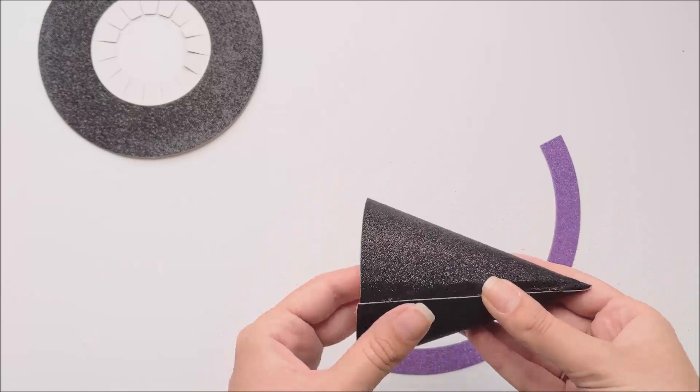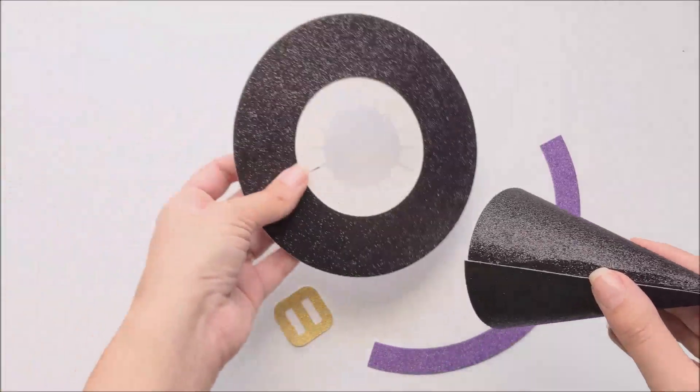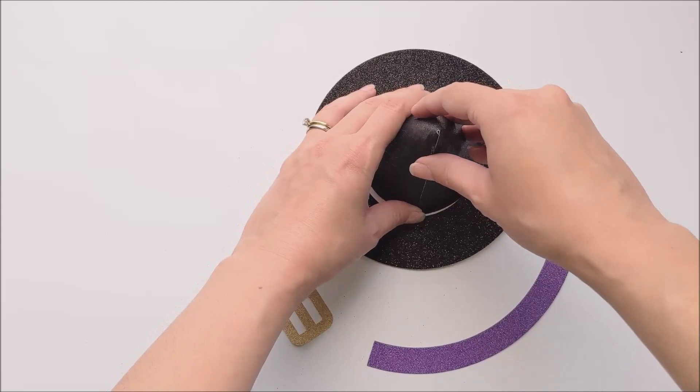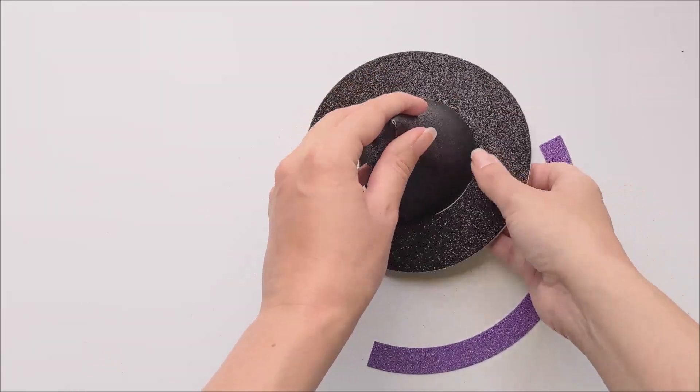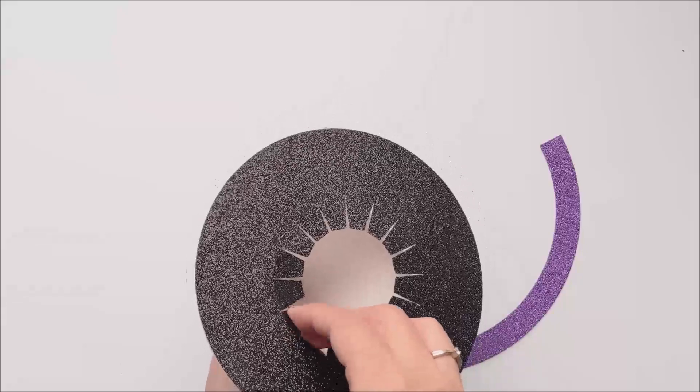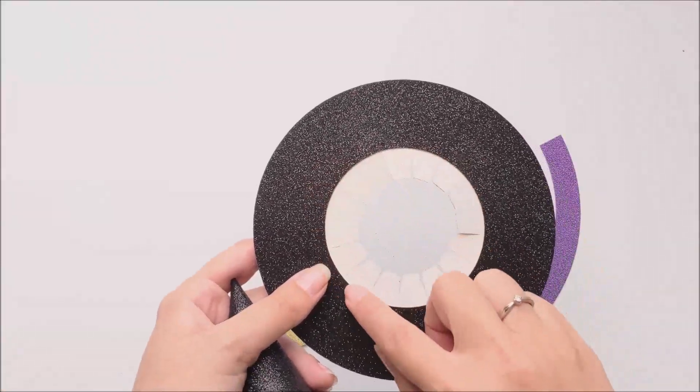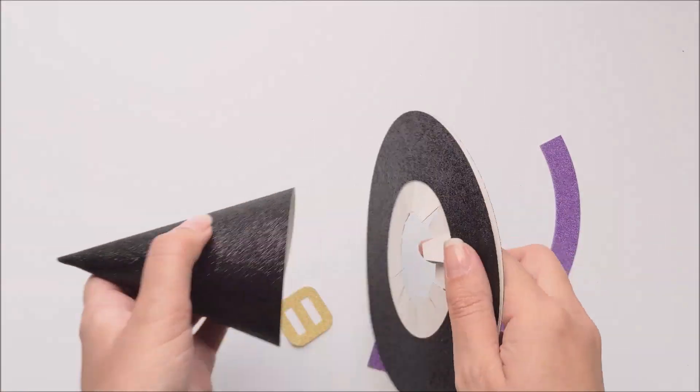Now that that's all ready and this is all dried with the glue, you're going to take your hat ring and put your hat top on top. If you see those little flaps, we're going to be folding those in. You're going to be applying glue on each of these little flaps and affixing it to the inside of your hat brim.